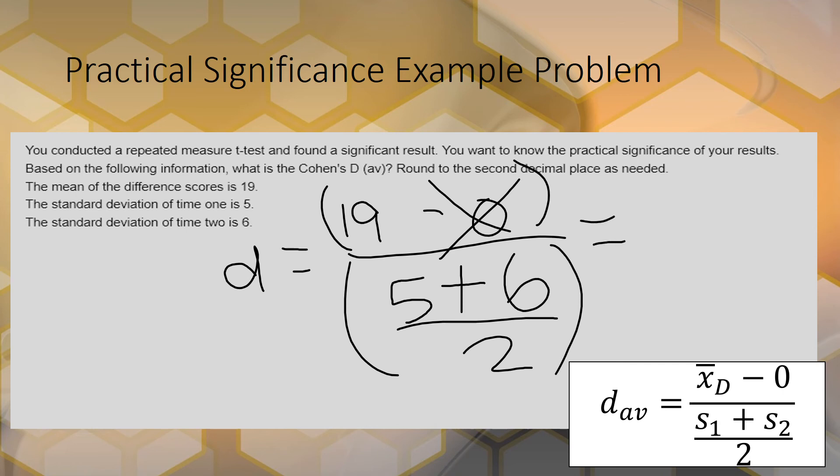This is just 19, and then you have another fraction here. So you want to do the top first - 5 plus 6 is 11, and then you do 11 divided by 2, which is 5.5. You have 19 divided by 5.5, and that equals 3.45 repeating.